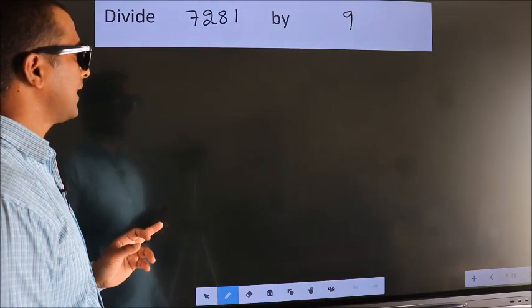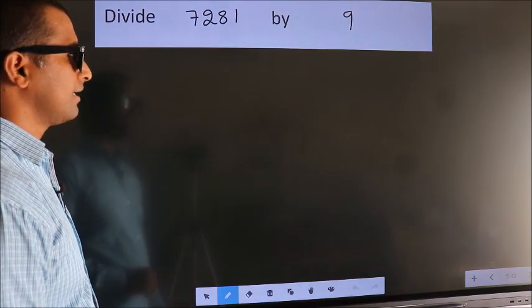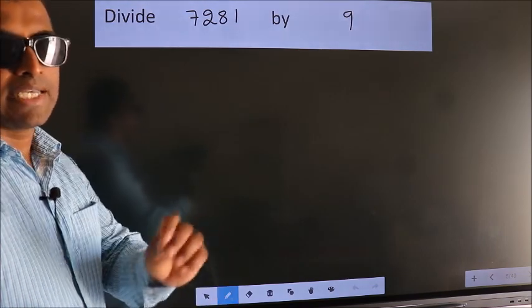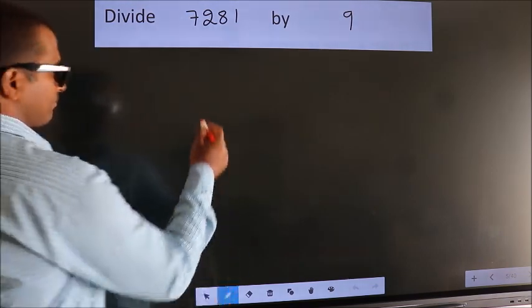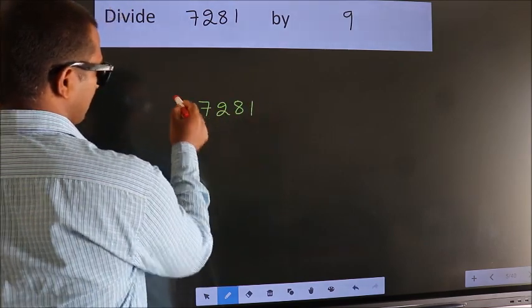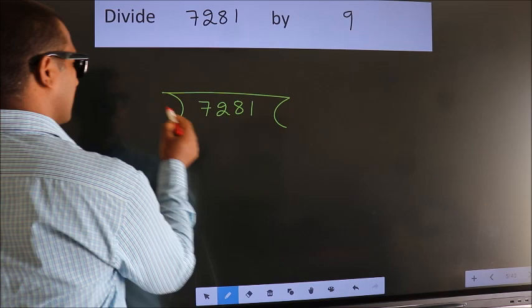Divide 7281 by 9. To do this division, we should frame it in this way: 7281 here, 9 here.